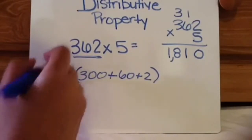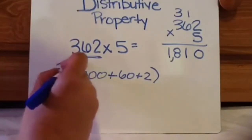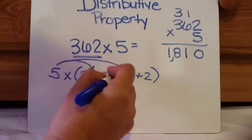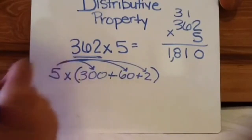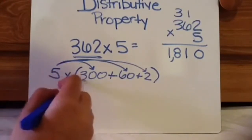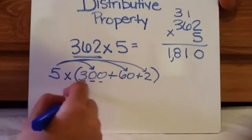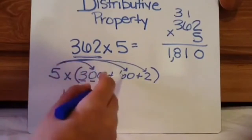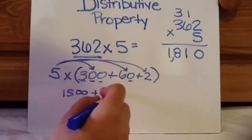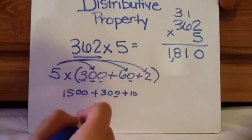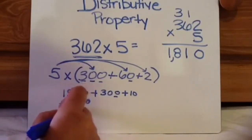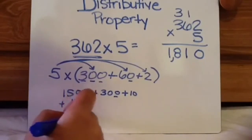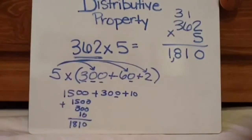So the distribute part is taking 5 and multiplying it by 300, taking 5 multiplying by 60, taking 5 and multiplying by 2. So 5 times 300, all you've got to do is 5 times 3 is 15, and there are two zeros, and then 5 times 60. Well, 5 times 6 is 30, and then there's one zero, and then 5 times 2 is 10. So now you have 1,500 plus 300 plus 10. I always recommend that you add them up and down. So your answer is 1,810.